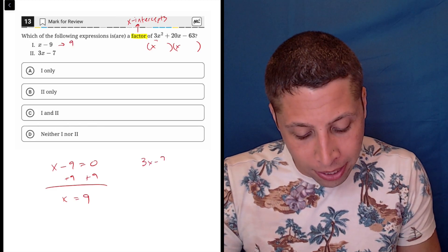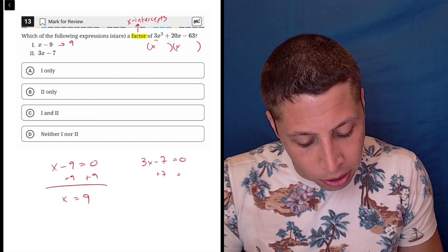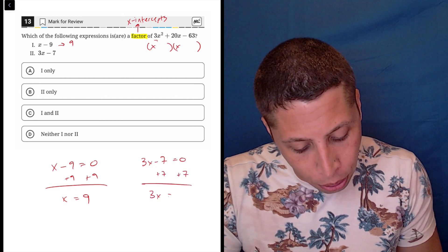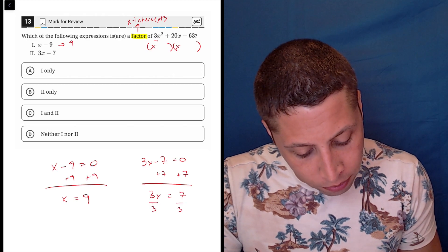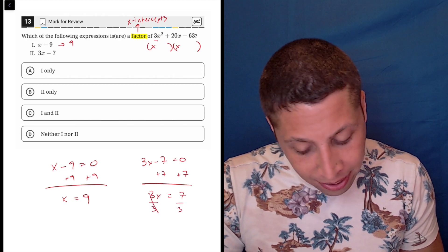And with 3x minus 7, it's a little weirder, but I can still solve it. So add 7 to both sides, 3x is equal to 7, and then divide by 3, and we get that x is 7 thirds.